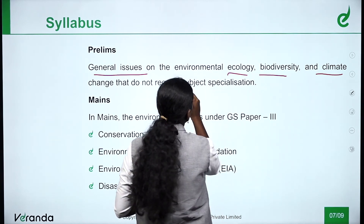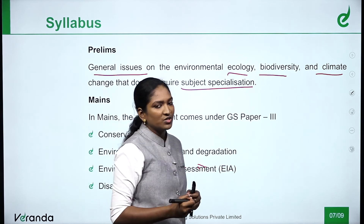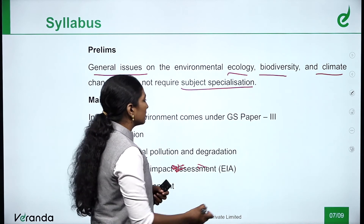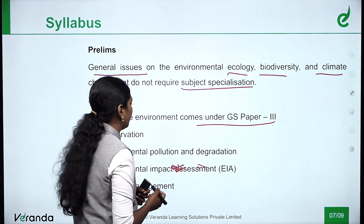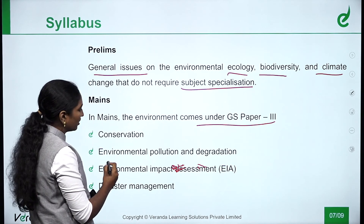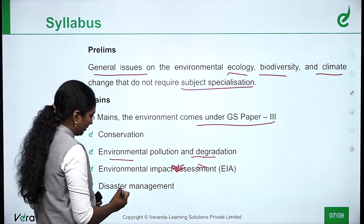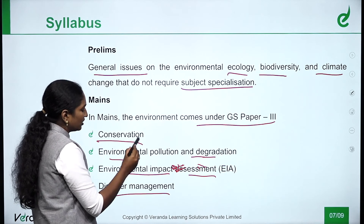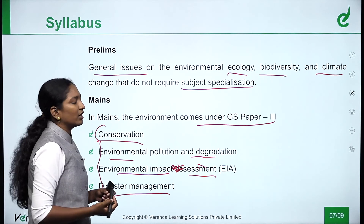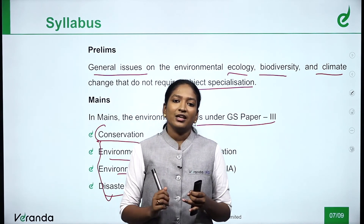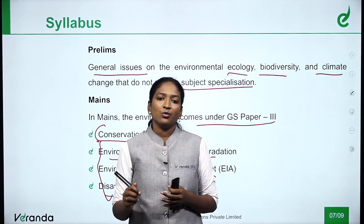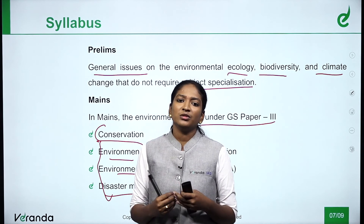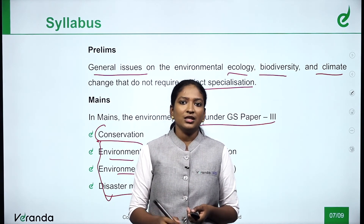You should not always rely only on subject specialization — whatever subject we need for current affairs, we need to link it with concepts and factuals. For mains, environment comes under GS Paper 3. Four major things are covered: conservation, environmental pollution and degradation, environmental impacts and assessments, and disaster management. We need to know all about EIA facts, EIA agreements, why EIA is implemented, when it was implemented, what conservation is, and why the environment is important.